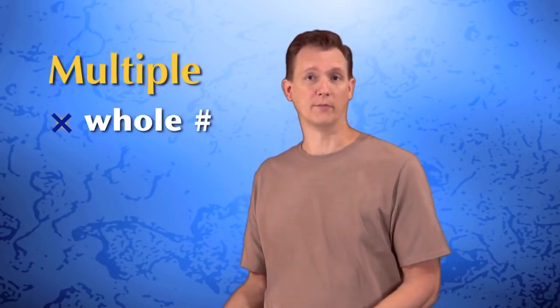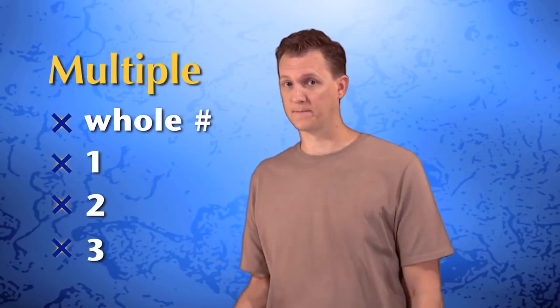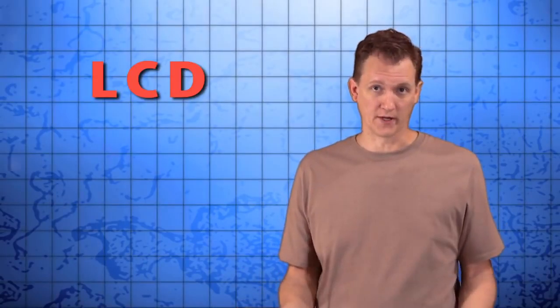Now in case you've forgotten, a multiple of a number is just the result of multiplying it by another whole number, like 1, 2, or 3. So here's what we're going to do to find the least common denominator, or LCD for short.